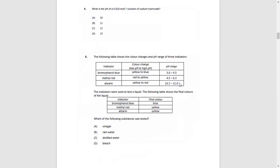Question 4: what is the pH of a 0.01 mol/L solution of sodium hydroxide? The OH⁻ concentration is 0.01 in a 1:1 ratio, which means pOH is 2, which means pH is 12.